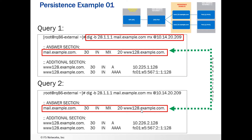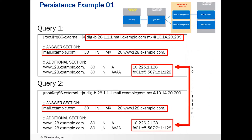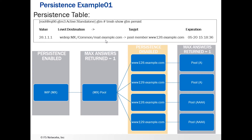We saw www.128.example.com returned in both queries. In the additional section, two answers were returned even though max answers returned was set to 1 — that's because www.128.example.com has two different wide IPs, an A and a Quad-A. We're getting responses from both of those. We did get a single response for each one, which is what we want. However, persistence is disabled at that level, so the IP addresses in the additional section are changing between queries — 1, 1, then 2, 2 — meaning we're not persisting there. We have one level of persistence, but within the additional section we're not persisting yet.